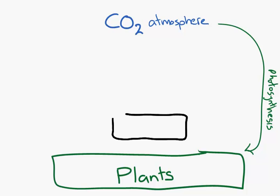We've got animals that are eating plants — we'll call them herbivores. We can go back a step and remind ourselves: first trophic level, second trophic level. And we've got eating going on, or consuming.